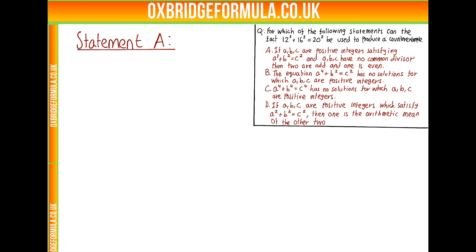Let's look at all these statements in turn. Looking at statement A first, what do we need for a counterexample? We need positive integers satisfying A squared plus B squared equals C squared, with A, B, C having no common divisor, and then we need it to be the case that two are odd and one is even isn't true. Let's look at 12, 16, 20.